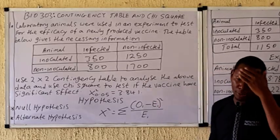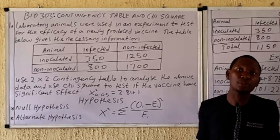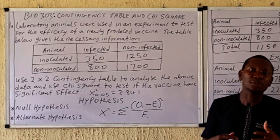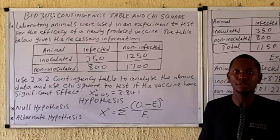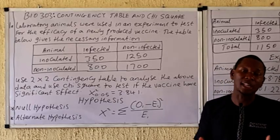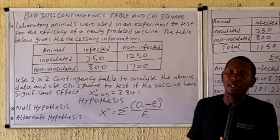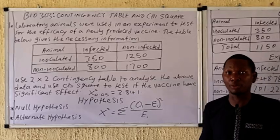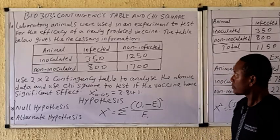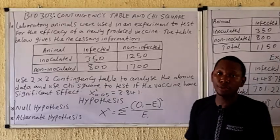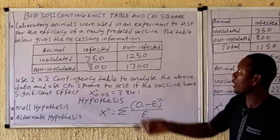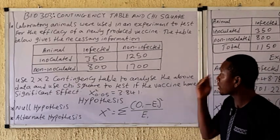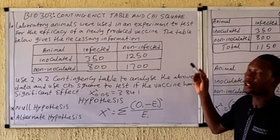The contingency table is a tool in statistics that is used to summarize and establish a relationship between two categories. The chi-square is used to test these categories — specifically, if there is a significant difference between them. I'll be covering two questions on how this experiment can be analyzed using the contingency table and the chi-square.